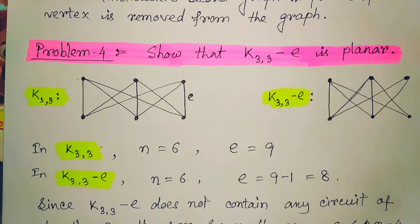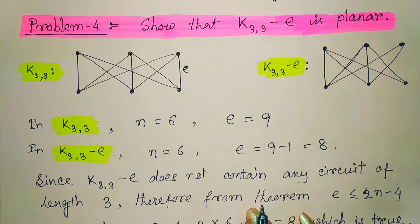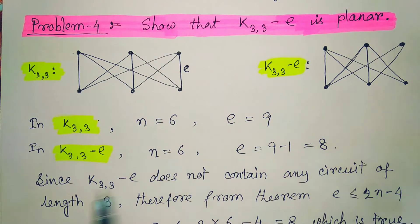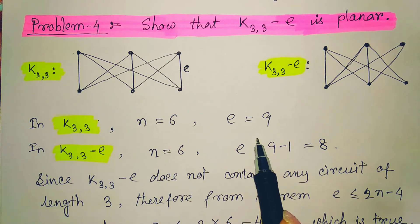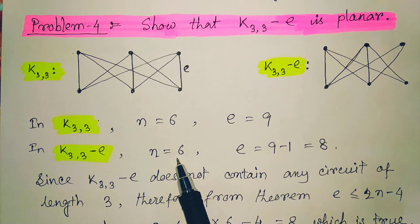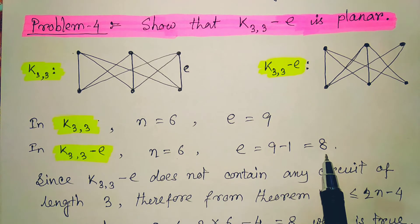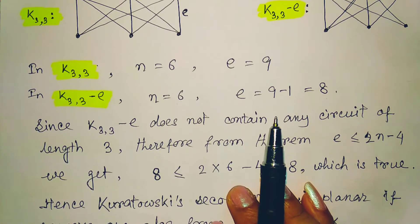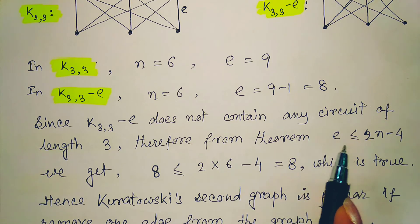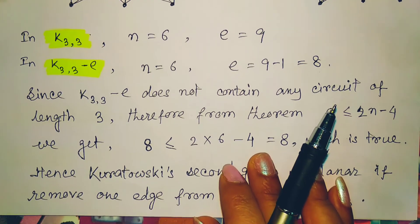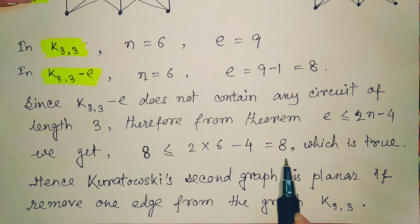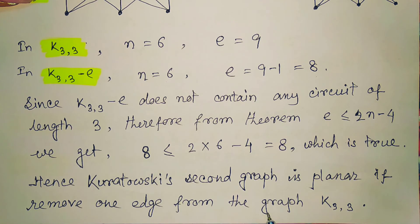Similarly, if we remove one edge from Kuratowski's second graph K3,3, the reduced graph has 6 vertices and 8 edges. Since this reduced graph contains no circuit of length 3, we apply Theorem 4: E ≤ 2N − 4. Substituting E = 8 and N = 6 gives 8 ≤ 8, which is true. Hence removal of one edge from K3,3 makes it planar.